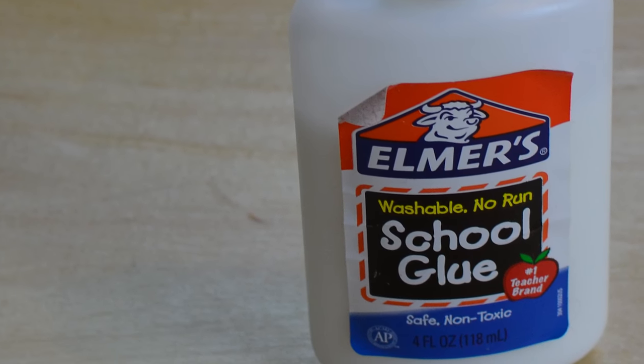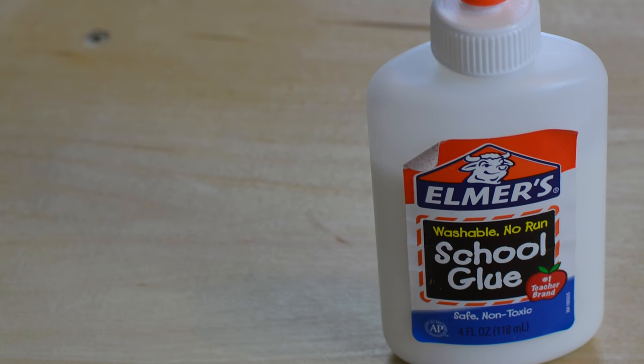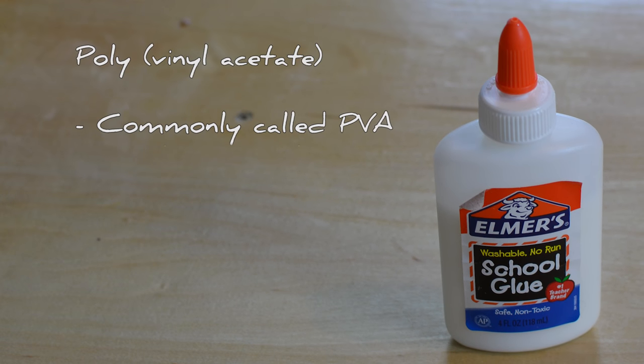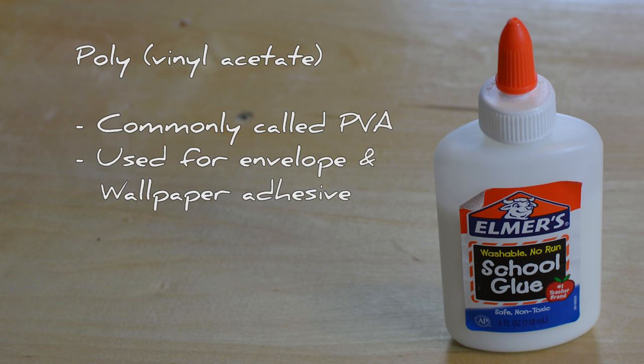School glue is made from polyvinyl acetate which is commonly called PVA. PVA is a vinyl polymer that has great adhesion properties for porous materials such as paper and wood. The adhesive that seals envelopes and holds wallpaper to the wall is PVA. It is even used as a primer for drywall.